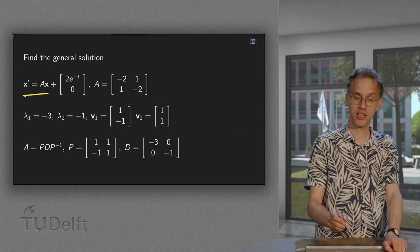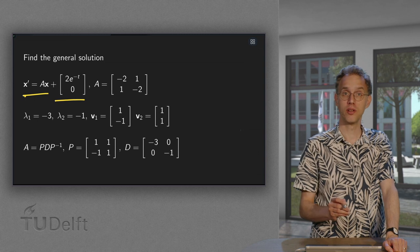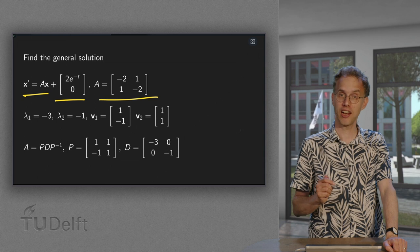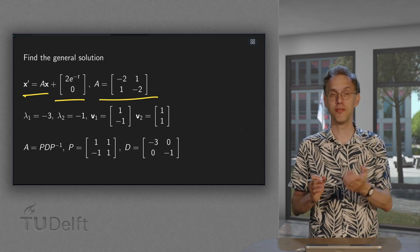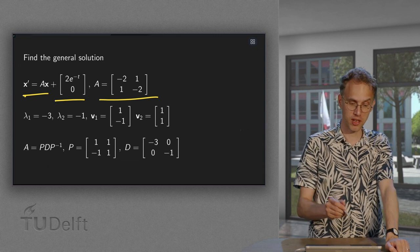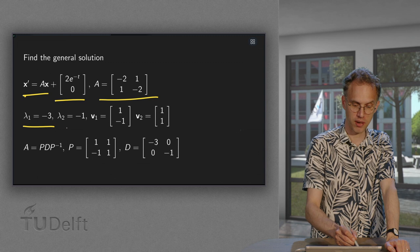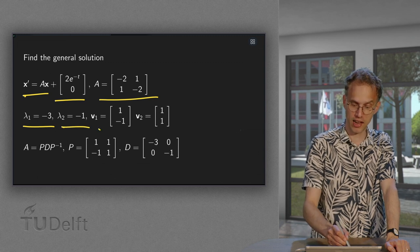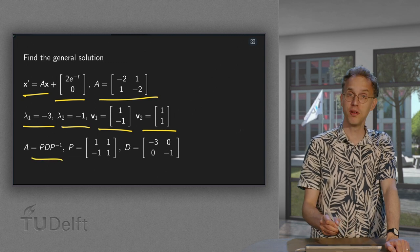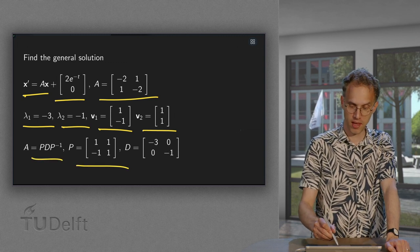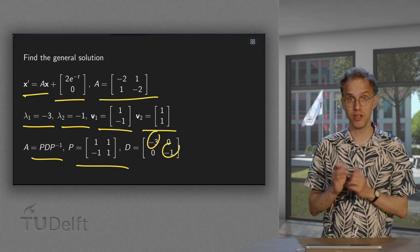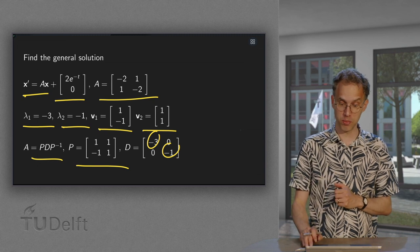We have x' equals A times x plus some non-homogeneous part. Here we have our matrix A, and A is diagonalizable. I'll just give those eigenvectors from linear algebra, you know how to compute them. In this case we have lambda minus 3 and minus 1, with corresponding eigenvectors (1, -1) and (1, 1). Which means that we can write A equals PDP inverse, v1, v2 in P, and lambda 1 and lambda 2 in the diagonal matrix. So how do we use this to solve our non-homogeneous problem?